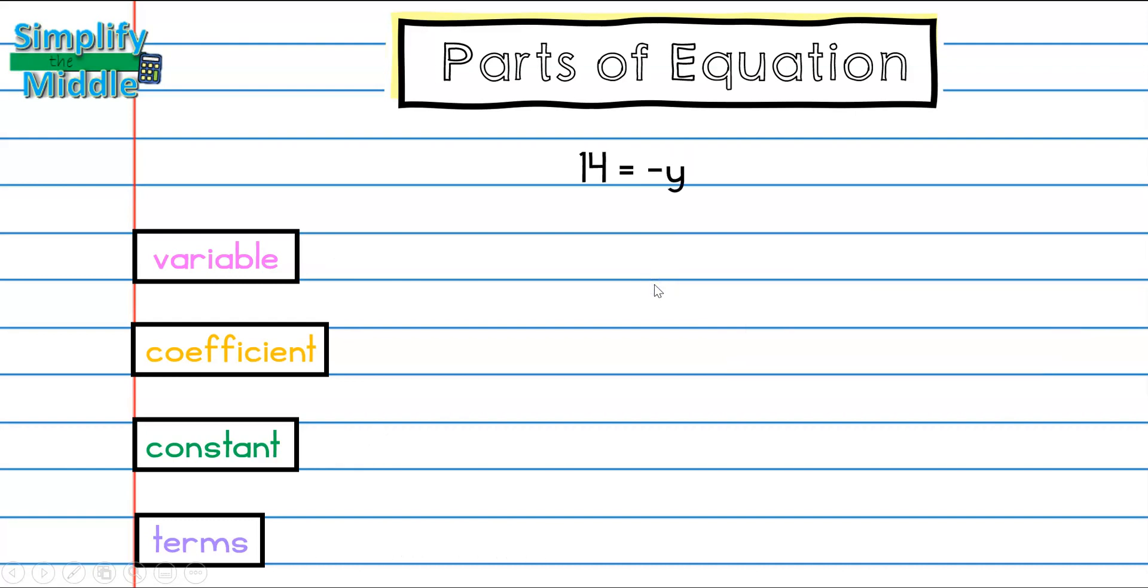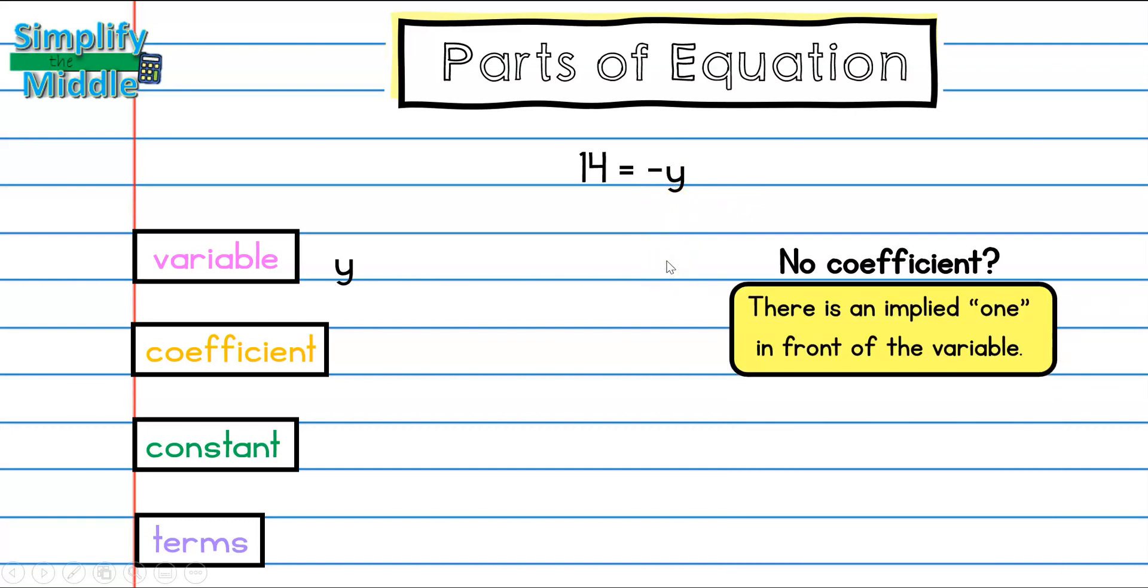Let's try another example. This one right here, 14 equals negative y. My variable is y. My coefficient, remember, when we have no coefficient in front, a number in front, it is automatically a 1. But because there's a negative symbol right here in front of that variable, I know that it's actually a negative 1 for this coefficient.